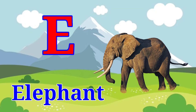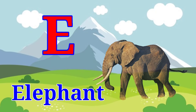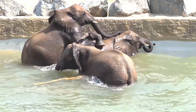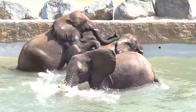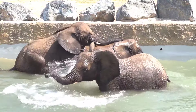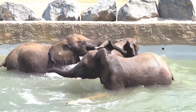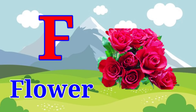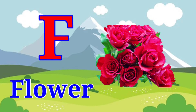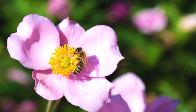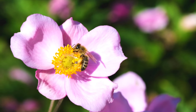E for elephant. Elephant means hathi. F for flower. Flower means phool.